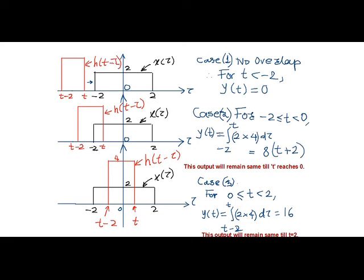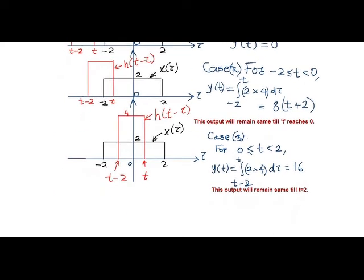In the third case, since h of t minus tau has now completely entered into the area of x of tau for the interval that is t between 0 to 2, the integration will therefore take place for the overlap region which is from t minus 2 to t.